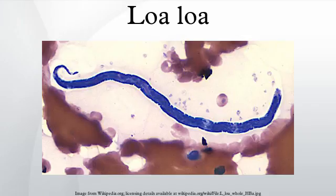Loa loa is the filarial nematode species that causes loiasis. It is commonly known as the eye worm. Its geographic distribution includes Africa and India. Loa loa is one of three parasitic filarial nematodes that cause subcutaneous filariasis in humans. The two other filarial nematodes are Mansonella streptocerca and Onchocerca volvulus.